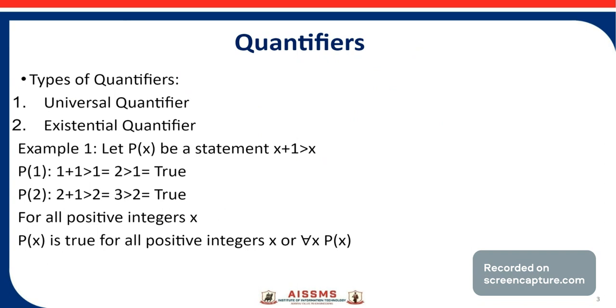Now, what are the types of quantifiers? The first one is the universal quantifier and the second one is the existential quantifier.